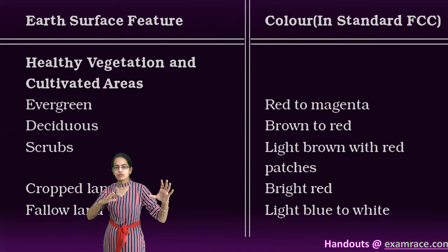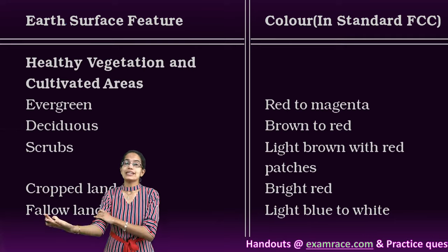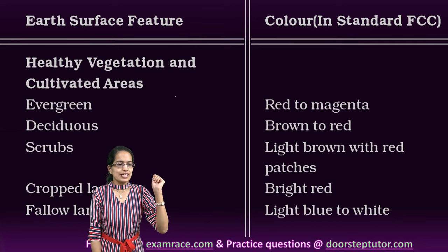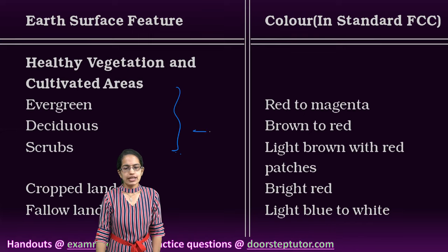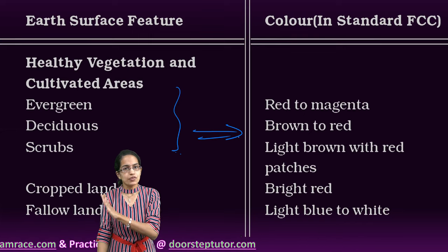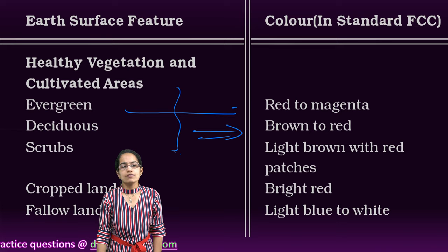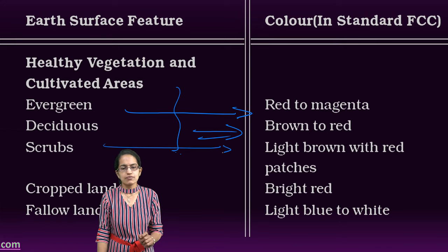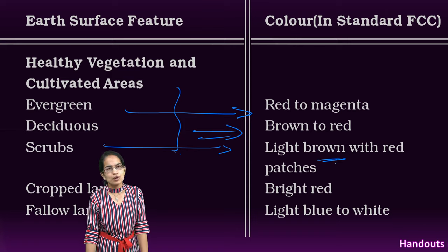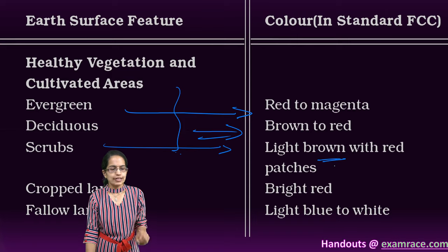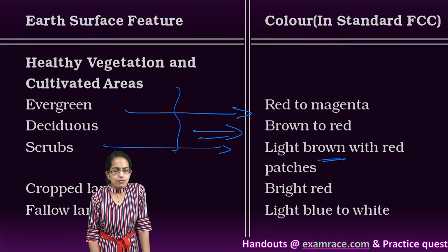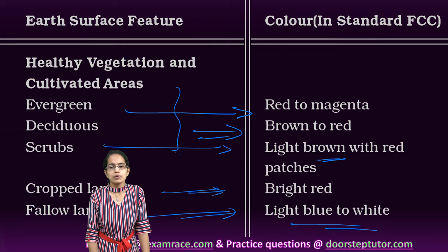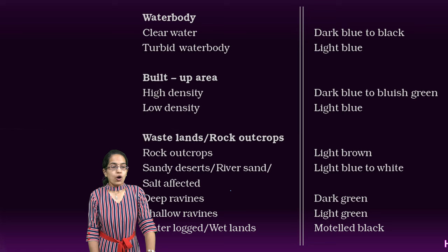Now, what kind of surface would convert into what color in a false color composite imagery? When it is a vegetation or a covered area, it would convert into shades of red and brown. Evergreen would convert into red to magenta. Scrubs would convert into light patches of brown or gray with small red patches. Fallow land would be blue to white in color. However, a cropped area would be bright red in color.